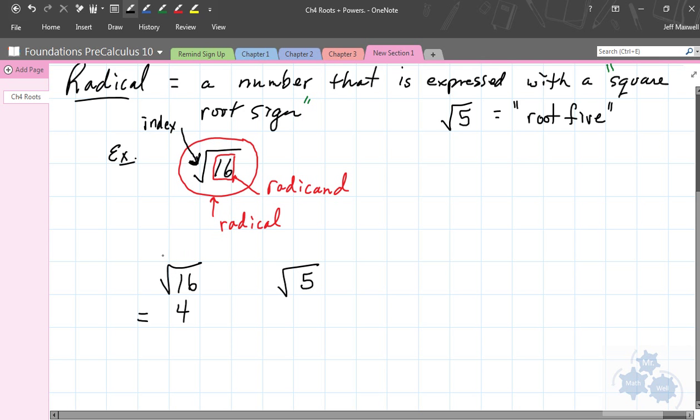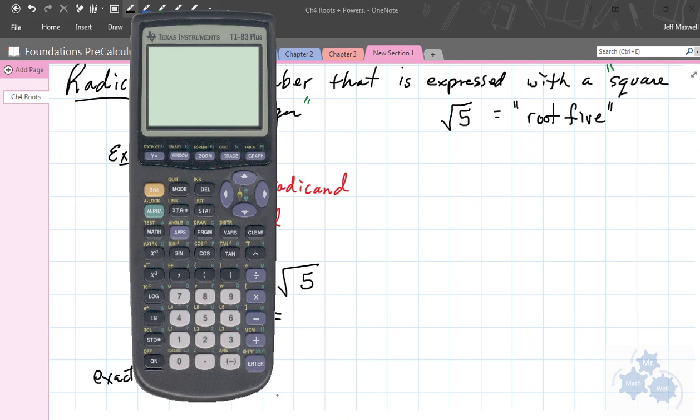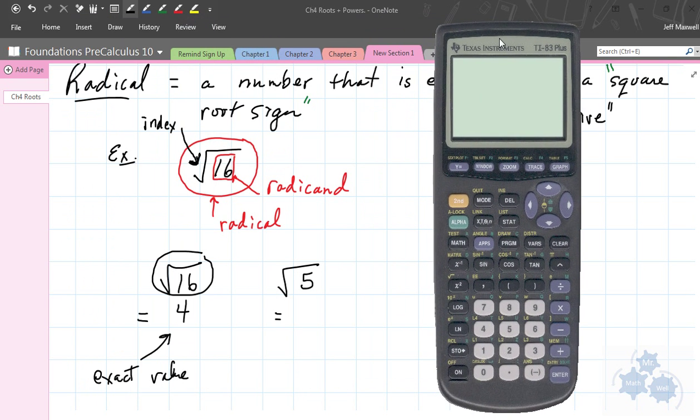When you see this radical, sometimes it has an exact value. If it's an integer, that's an exact value. Square root of 5, in order to get the value for square root of 5, you're going to have to go on your calculator.